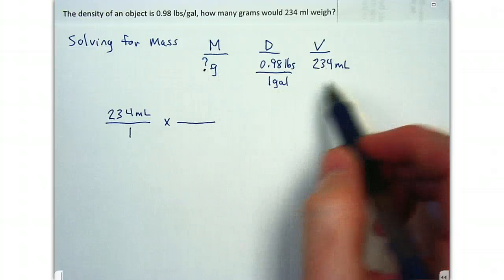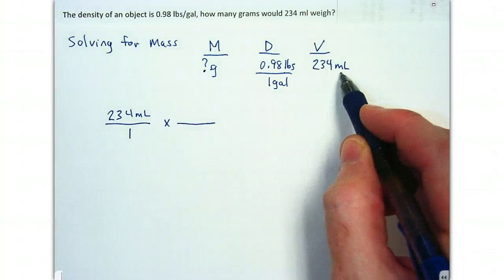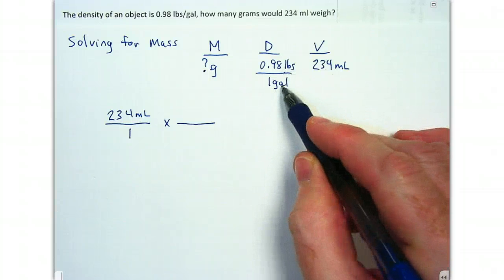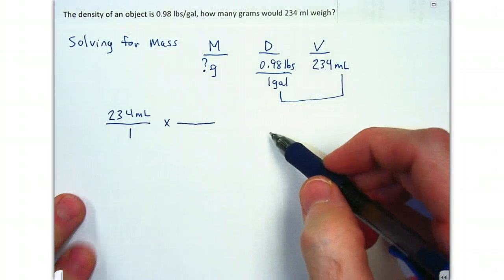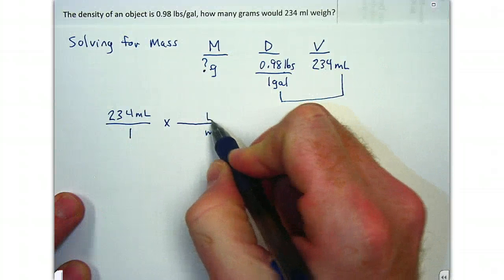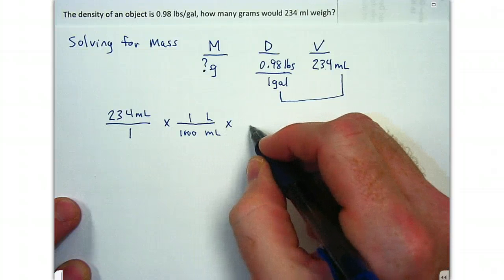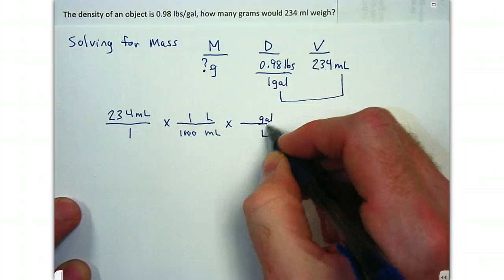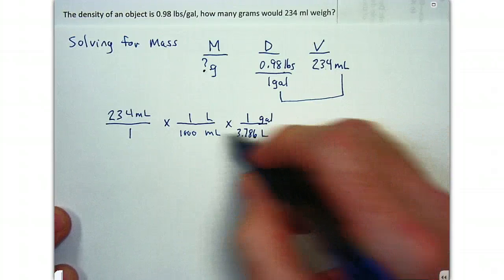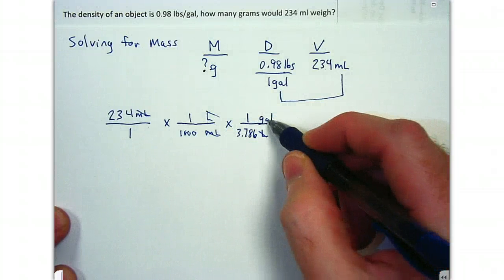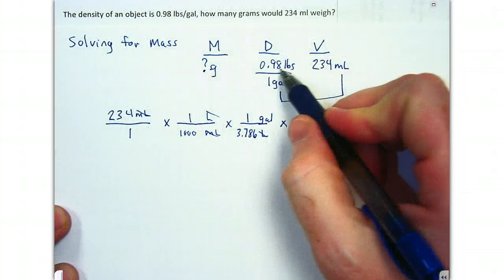We need to decide how to get to mass. We're starting with volume, and since we transition through density, we need to find what the volume unit is in density — it's gallons. So we're at milliliters and need to go to gallons. We convert milliliters to liters: 1,000 milliliters in one liter. Then liters to gallons: 3.786 liters per gallon. Now we're at gallons, and milliliters and liters cancel. This is where we insert our density to cancel out the volumes and work toward our mass.